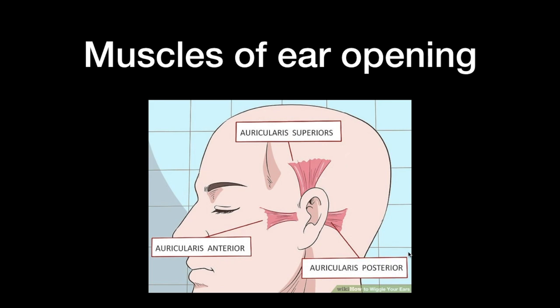The last muscles in this video are the three muscles around the ear opening: auricularis anterior, auricularis superior, and auricularis posterior. These muscles are located closest to the skin, above the musculus temporalis or its fascia. They're responsible for moving the ear when you smile or lift the eyebrows. Some people can actually move the ear without moving any other structure of the face. That's the end of the video — I hope this was helpful.